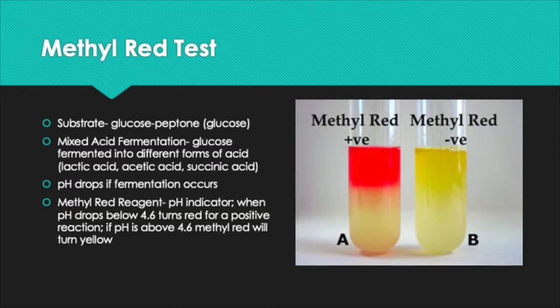The next test is what the M stands for in MVIX — the methyl red test, or MR test for short. The substrate is glucose in this tube, and we are looking to see if the bacteria has the ability to ferment the glucose, specifically mixed acid fermentation. In your lab manual there is a sheet called the MVIX cheat sheet — a chart with each test broken down along with the substrates, reagents added, and results. I highly recommend you star that page because everything you need to know for MVIX is going to be on it.